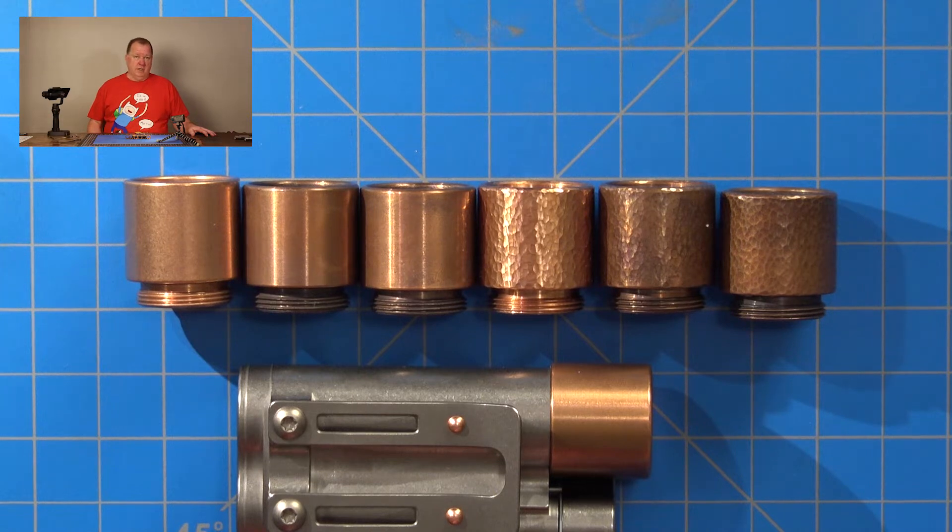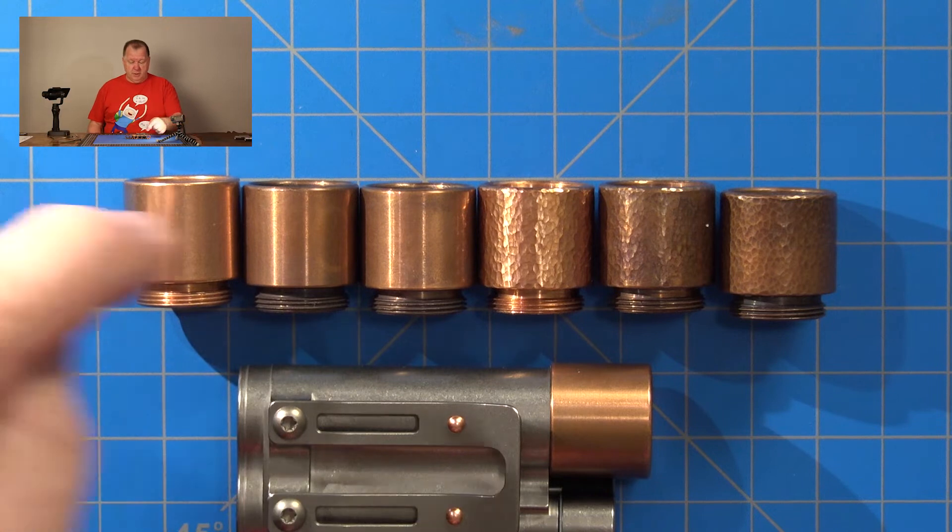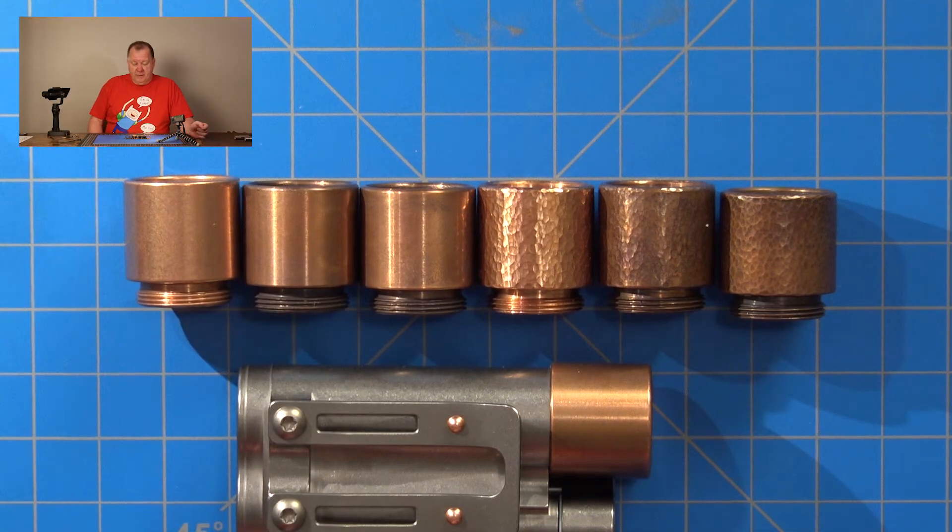The base model of the Trek is going to come with this smooth copper. However you want it, it can have a patina.